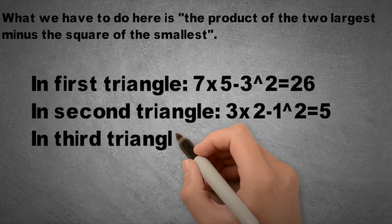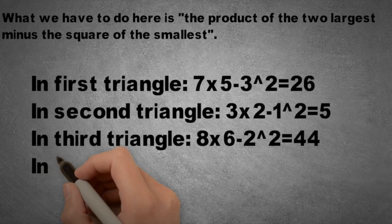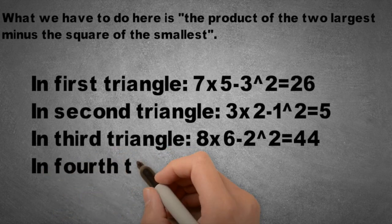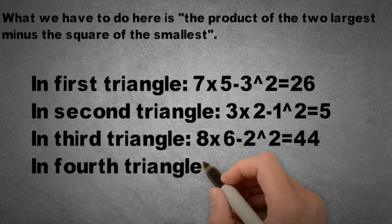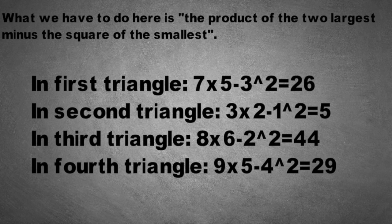In third triangle, 8 times 6 minus square of 2, that is equal to 44. In fourth triangle, 9 times 5 minus square of 4, that is equal to 29. And that's how we got the answer.